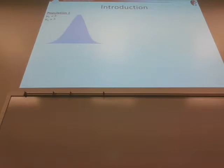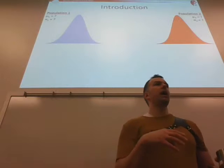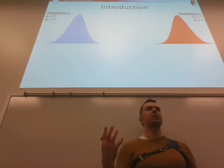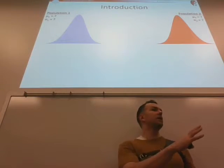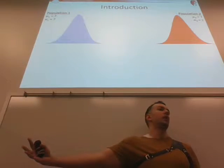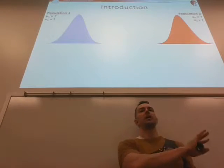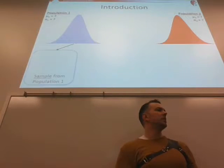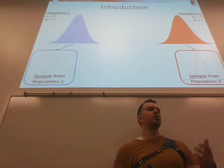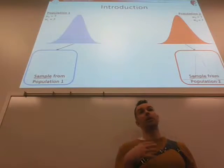Up until this point in general, we've been looking at studies where you have one population and a second population, and you want to know: are those two populations different? Is the population of attractive males perceived as more intelligent than unattractive males? Is the population of males less concerned with health food risks than females? It's always been two populations, and we would take a sample from each and use a t-test to analyze it.